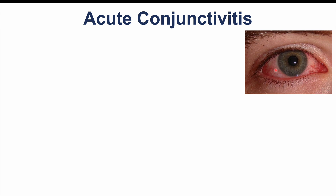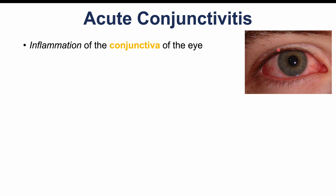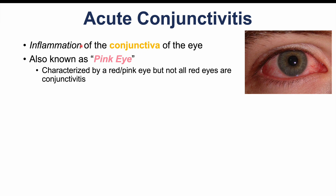Before we talk about the signs and symptoms, let's talk about what conjunctivitis is. Conjunctivitis is an inflammation of the conjunctiva of the eye. The conjunctiva is a membrane that covers the inner lining of the eyelid and also the outer surface of the eye. In this condition, that membrane becomes inflamed. Acute conjunctivitis is also known as pink eye, and although it is characterized by a red or pink eye, not all red eyes are conjunctivitis.